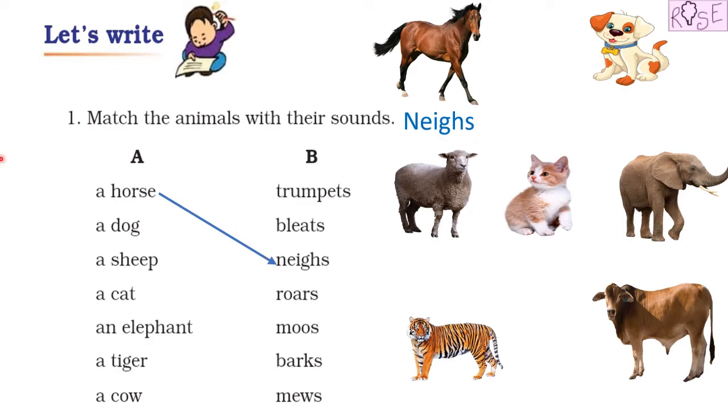Let us move on to the next animal. The next animal is a dog. So a dog barks. Yes, bow wow, a dog makes the sound of barking. We will write barks under this picture of dog.